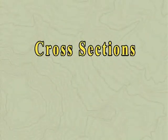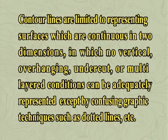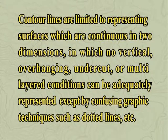Now let us discuss cross sections. Contour lines are limited to representing surfaces which are continuous in two dimensions, in which no vertical, overhanging, undercut or multi-layered conditions can be adequately represented except by confusing graphic techniques such as dotted lines.